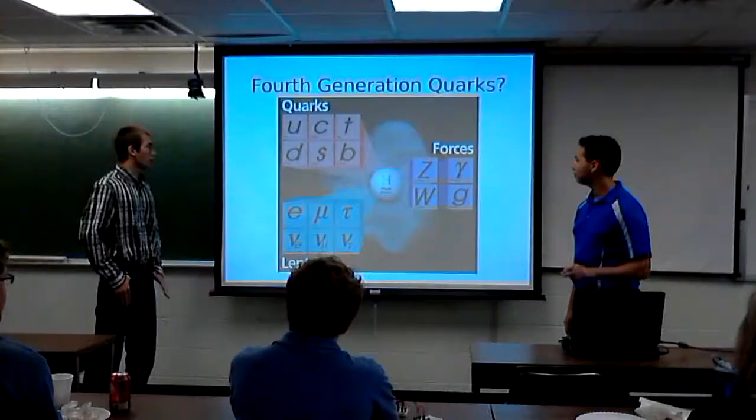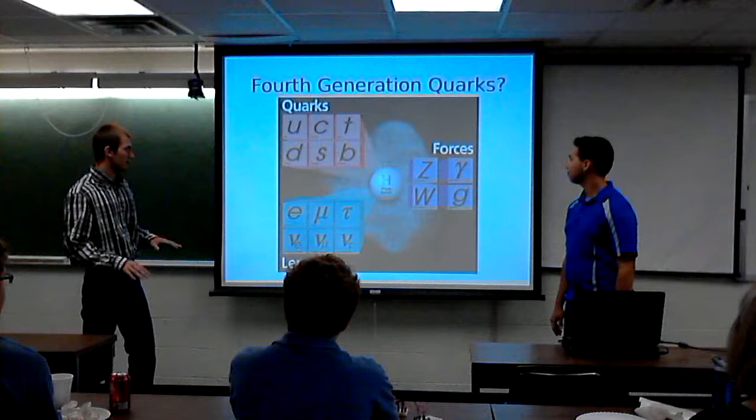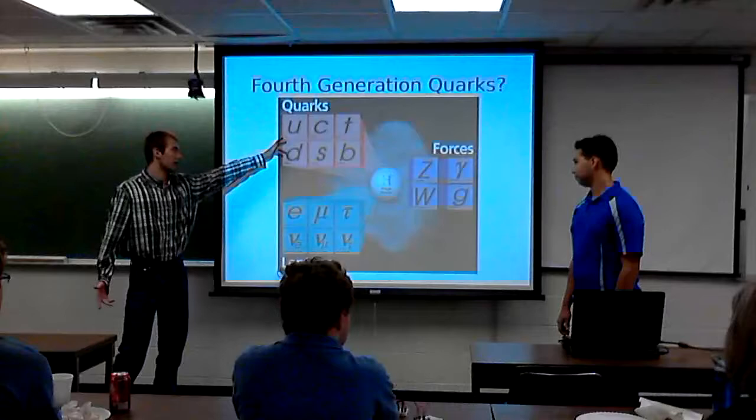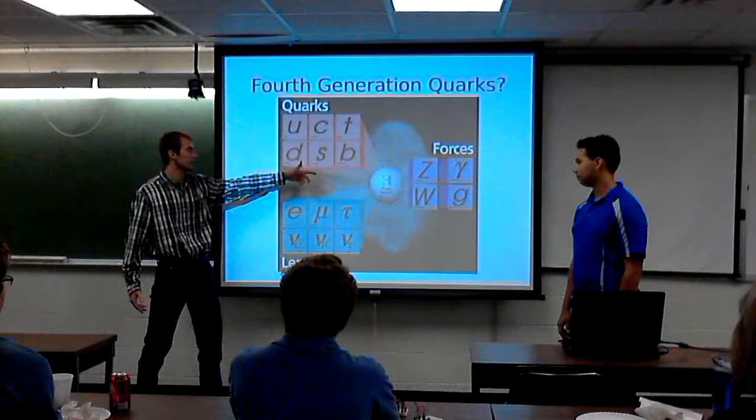First off, a little physics. This is the standard model as we know it today. And here are the quarks. There are three generations: up and down are the first generation, charm and strange are the second generation, and top and bottom are the third generation.